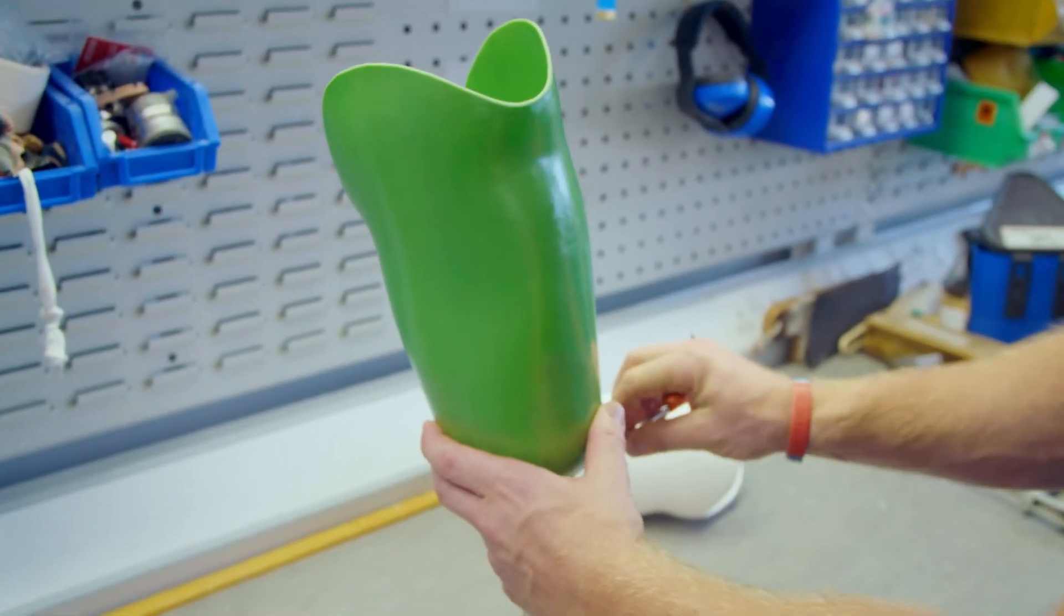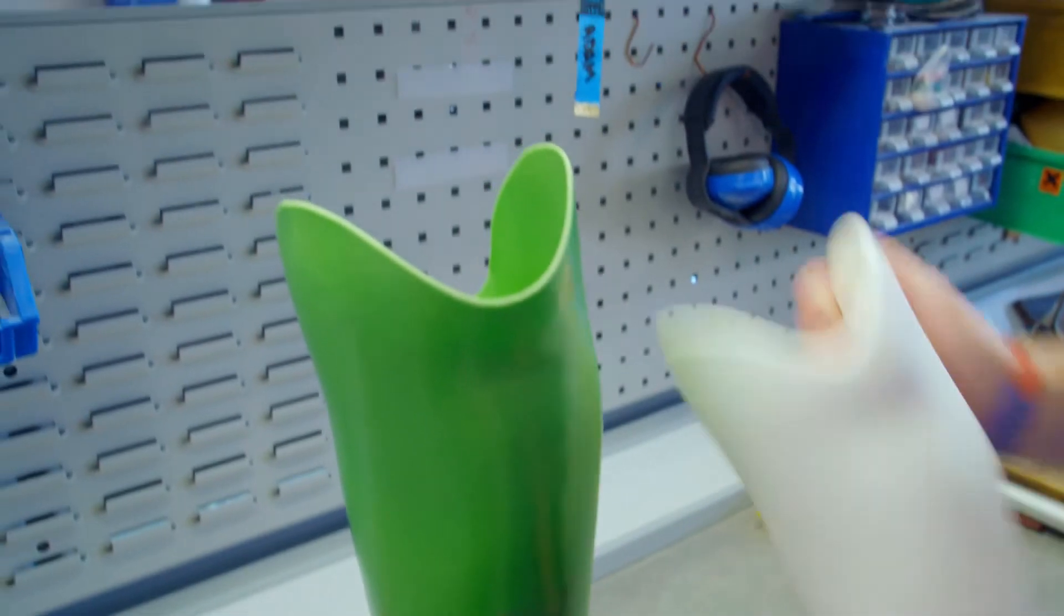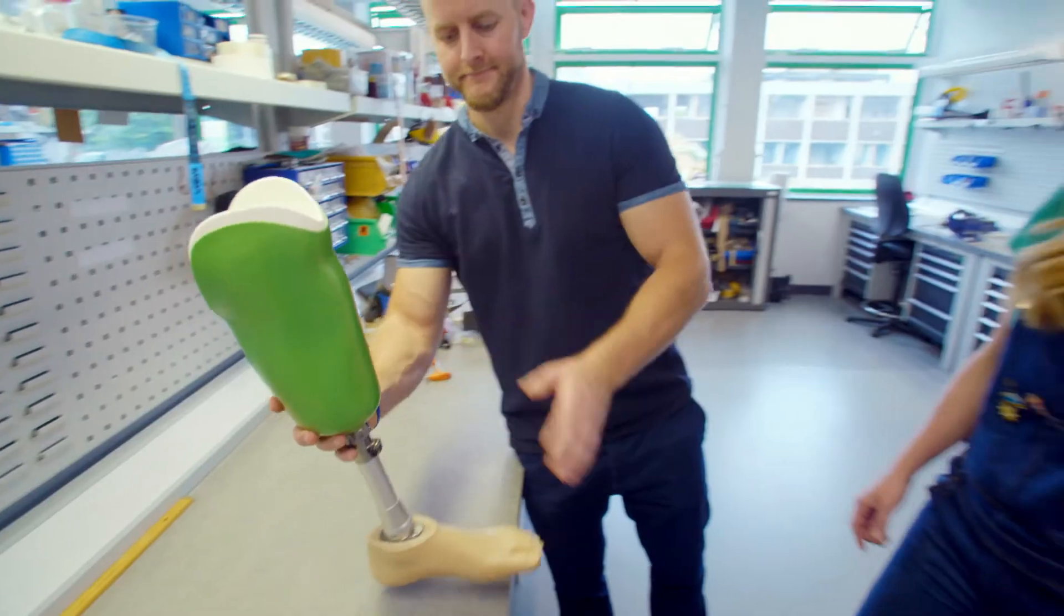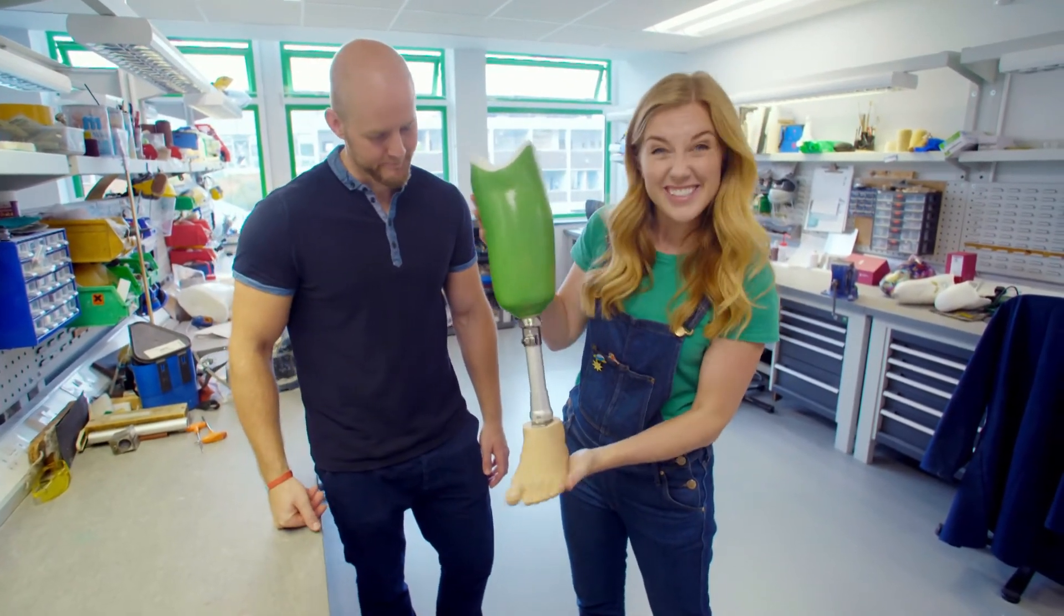The shin tube is then fixed to the finished socket. And look, there's the liner going in too. And here we have a finished prosthetic leg. Doesn't it look great?